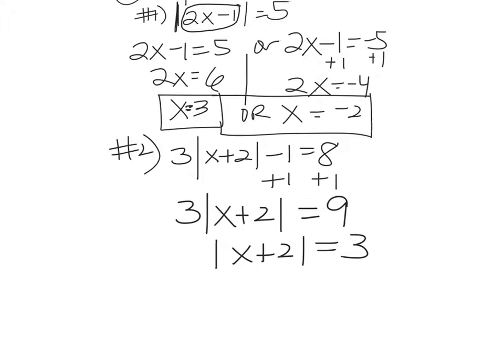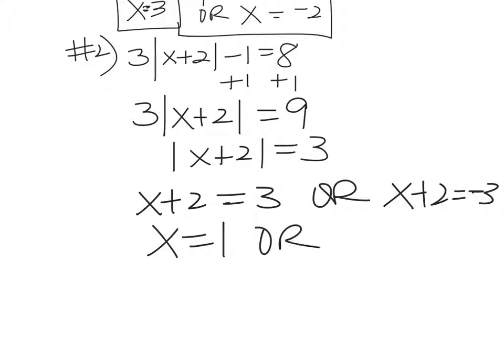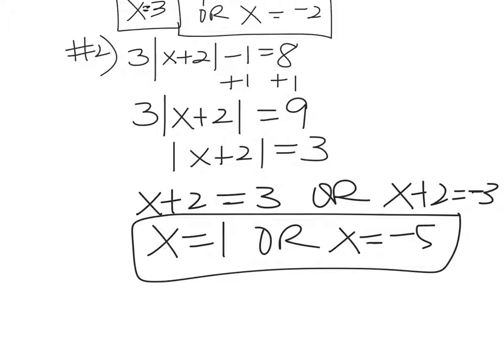So the first thing you have to do is you need to get all of that other stuff out of there. So we're going to start by adding 1 and getting that over to the other side. We're trying to isolate our absolute value, get the absolute value by itself. So you add 1. 3 times x plus 2 equals 9. Do not distribute that 3 in there. Let's divide both sides by 3. Absolute value of x plus 2 is equal to 3. And now we're ready to set up our two equations. Our absolute value equals 3. That means this stuff in here, this x plus 2, can equal 3 or x plus 2 equals negative 3.